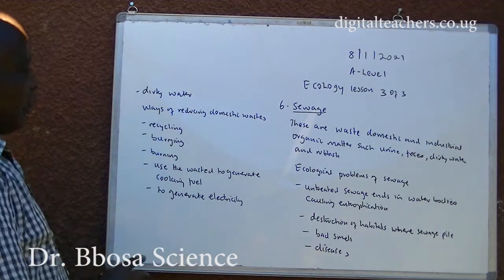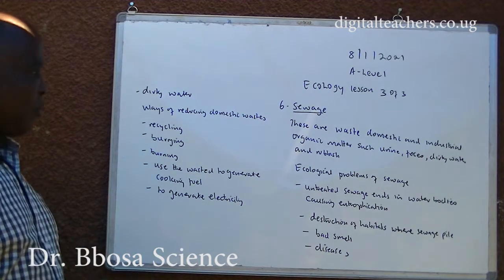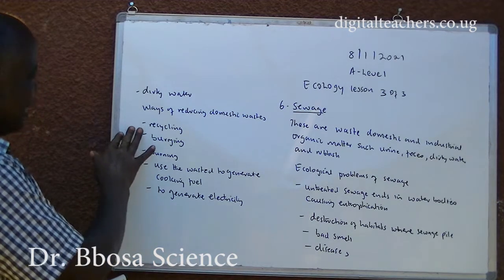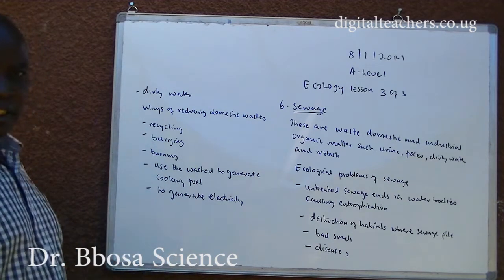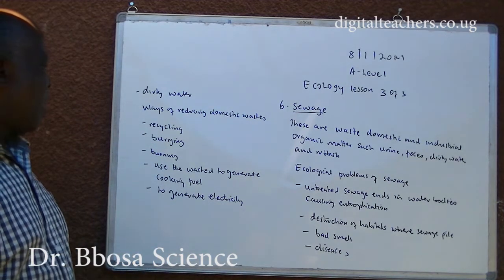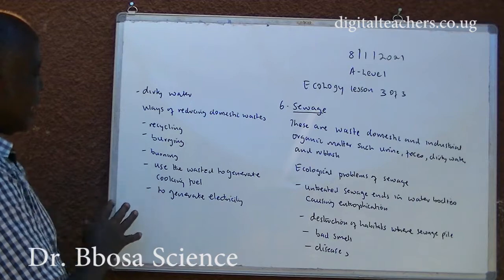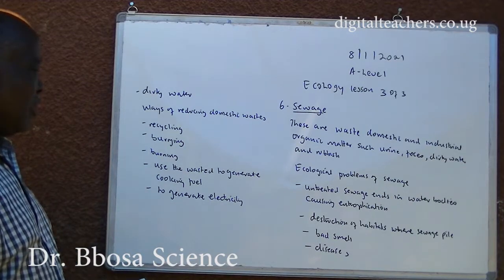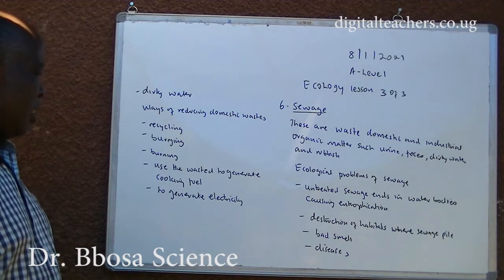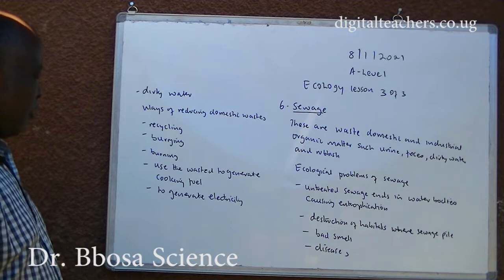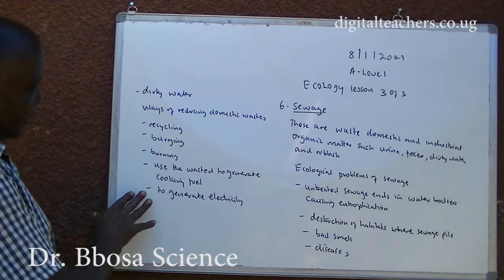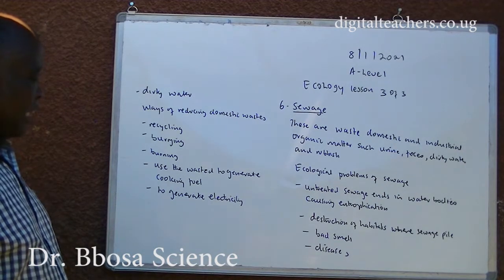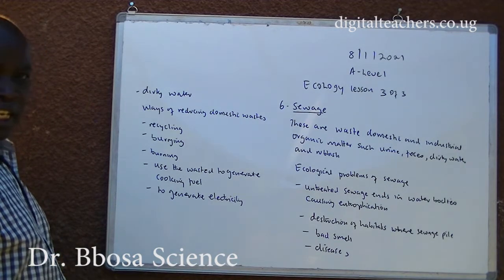Ways of reducing domestic wastes: recycling, burying, burning, using the wastes to generate cooking fuel, and using them to generate electricity.